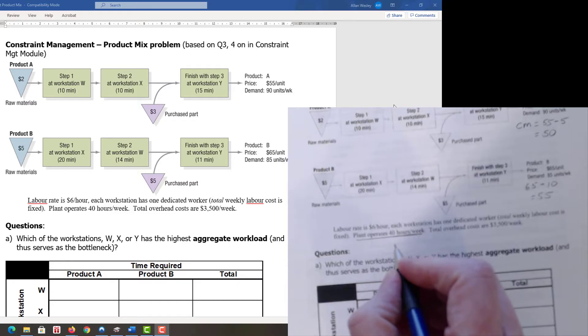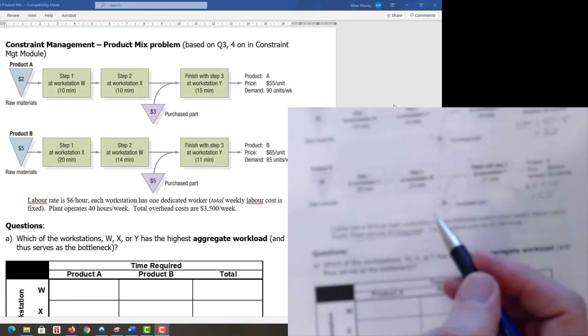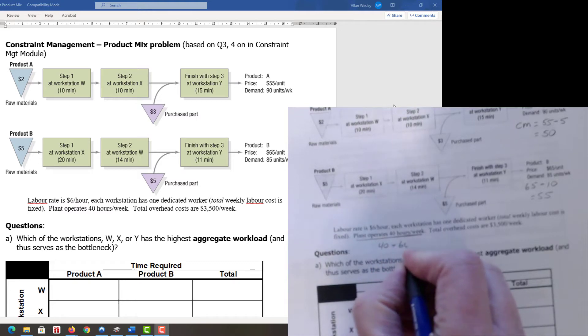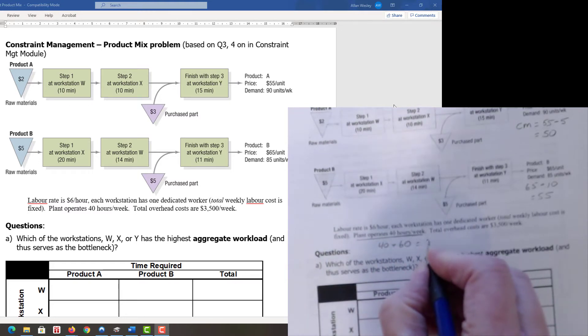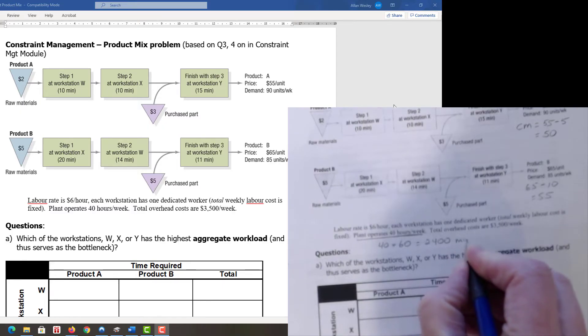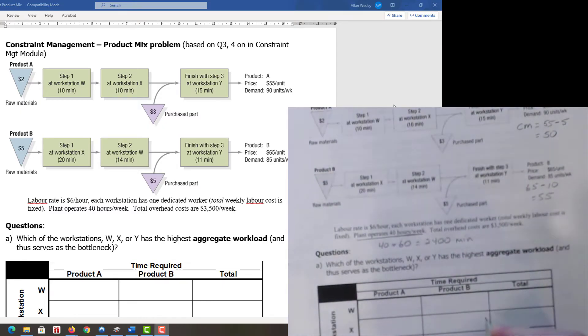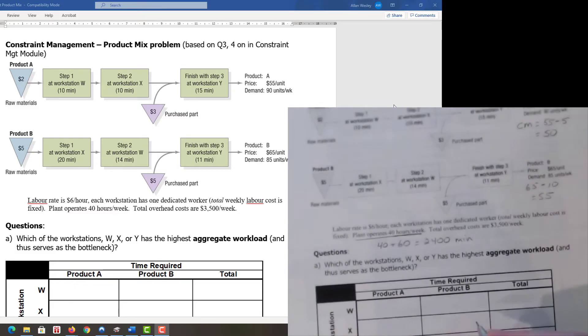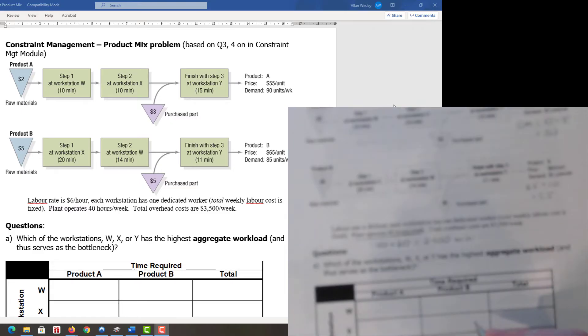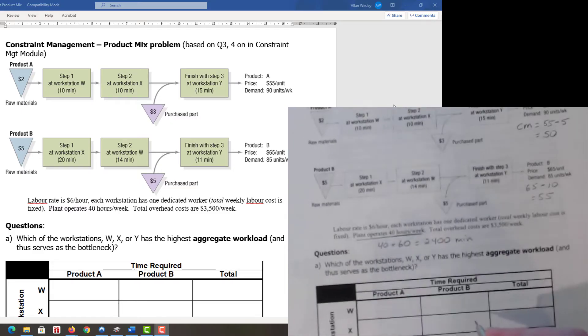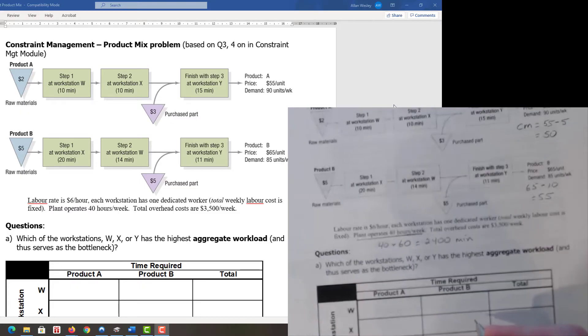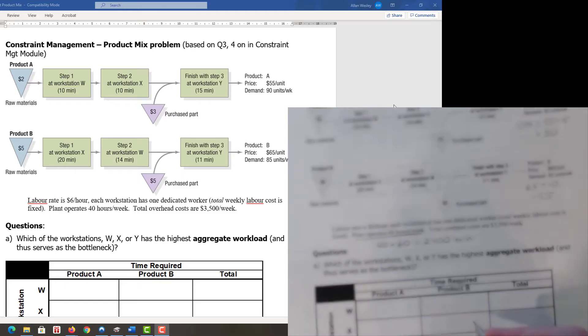How many minutes is 40 hours? Since all our workstation time is in minutes, that's 40 hours times 60 minutes per hour, giving us 2,400 minutes available for each constraint. Now we need to know how much of each resource is used if we produce as much A and B as we can sell.